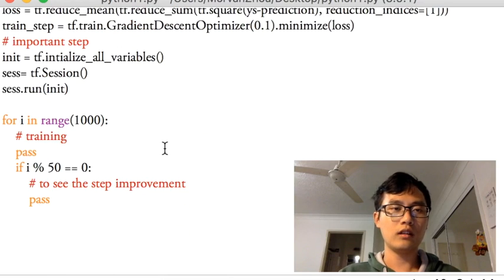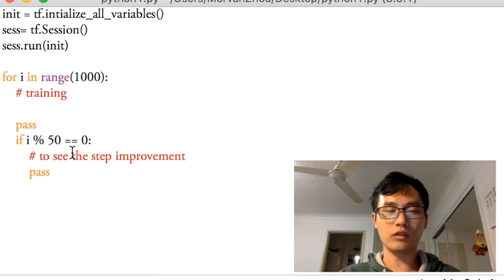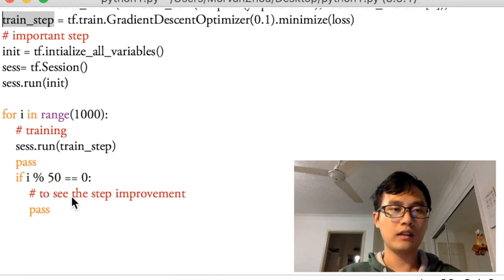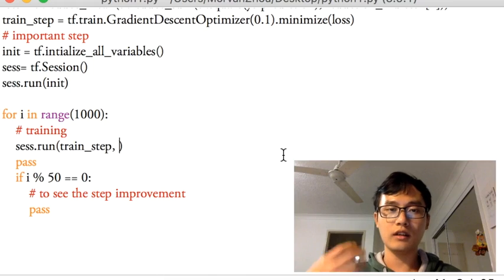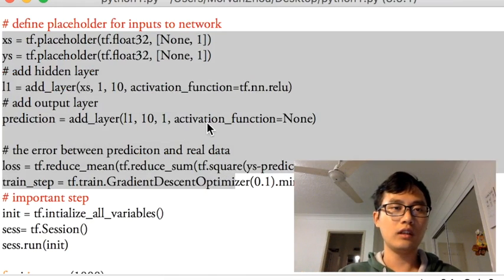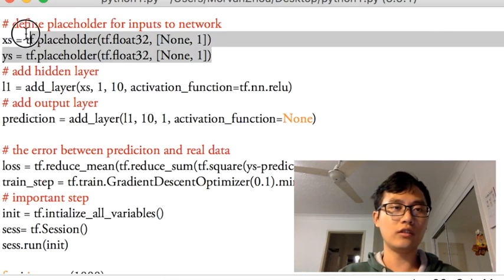So now we're going to start our training step. Session.run train_step. This is the train_step over there to optimize, use the optimizer to minimize the loss.